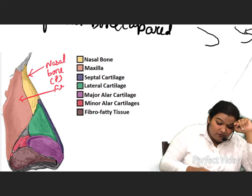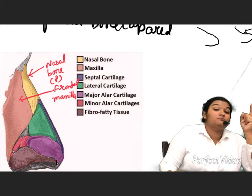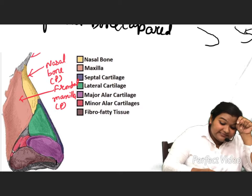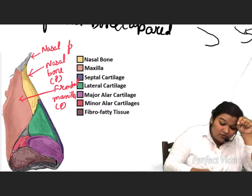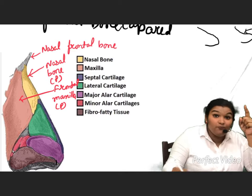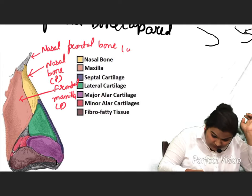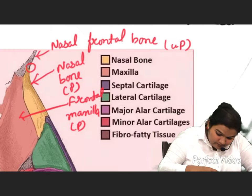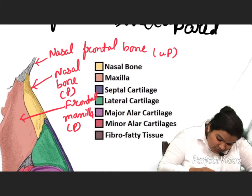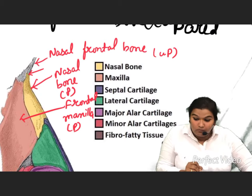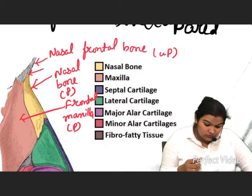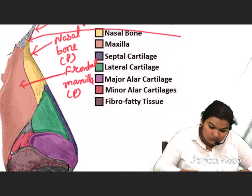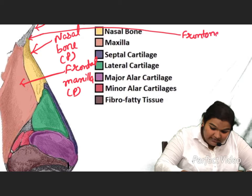The frontal process of maxilla is paired. Now, this is the nasal process of frontal bone — it is an unpaired bone. Can you see this suture over here? This is the frontonasal suture.